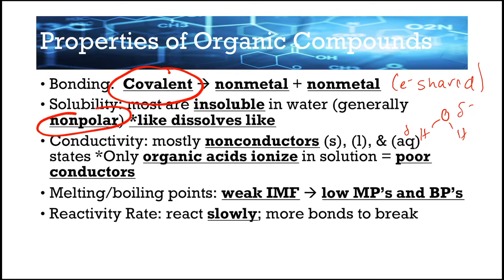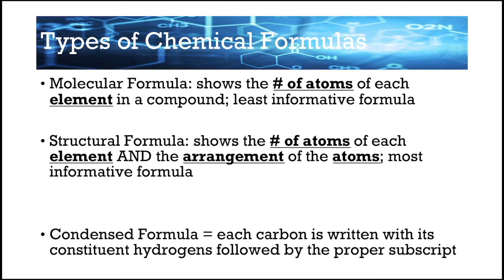Organic compounds have weak intermolecular forces, meaning the attractions between different molecules are pretty weak and easy to break apart — so they have low melting and boiling points. They react generally slowly because when we see these different compounds they get bigger and bigger, and it takes a lot of time to break all of them apart. Even though their intermolecular forces are weak, there are a lot of bonds that need to be broken, which is why the reactivity rate is low.